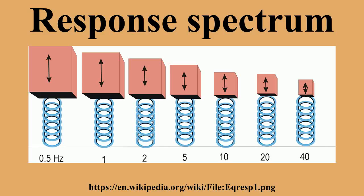Seismic response spectra are very useful tools of earthquake engineering for analyzing the performance of structures and equipment in earthquakes, since many behave principally as simple oscillators. Thus, if you can find out the natural frequency of the structure, then the peak response of the building can be estimated by reading the value from the ground response spectrum for the appropriate frequency. In most building codes in seismic regions, this value forms the basis for calculating the forces that a structure must be designed to resist.